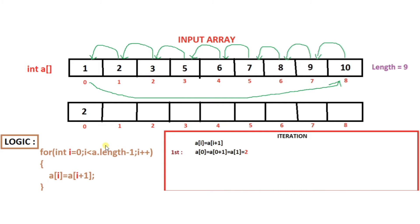I will make a for loop which starts from i equals zero and increments while i is less than length minus one. Our length is nine, so nine minus one is eight — meaning the loop will execute eight times, because eight is not less than eight but seven is. Inside this for loop we will set a[i] equal to a[i + 1].